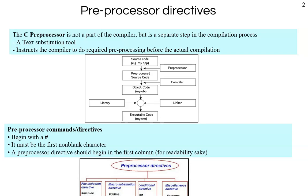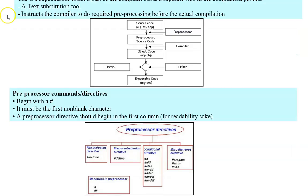Now let's look at what a preprocessor directive is. A preprocessor directive starts with a hash symbol — the pound symbol — and it must be the first non-blank character, beginning in the first column. There are four major types: the `#include` directive, which we have already used (e.g., `#include <stdio.h>` or `#include <stdlib.h>`); `#define`; conditional directives; and miscellaneous directives. We will cover all four in this chapter.